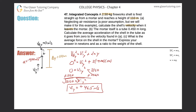Letter B: the mortar itself is a tube 0.45 meters long. Calculate the average acceleration of the shell in the tube as it goes from zero to the velocity found in Part A. So here's where the firework starts inside the mortar. The length of the mortar is delta y equals 0.45 meters. The initial velocity of the object at this location is zero.